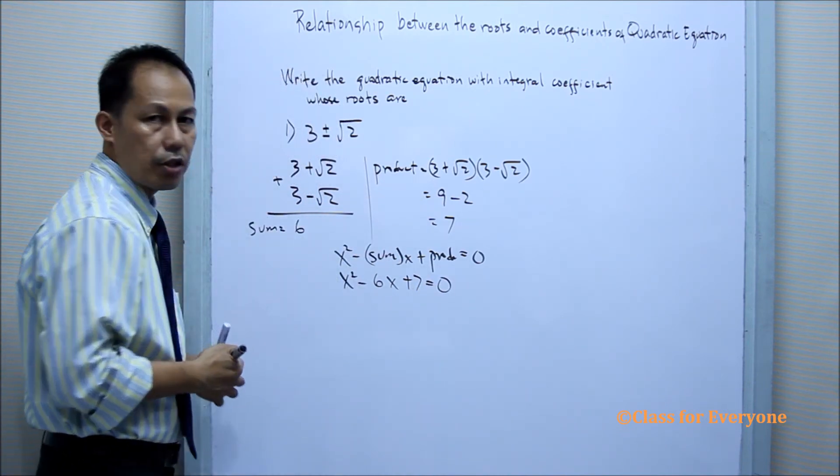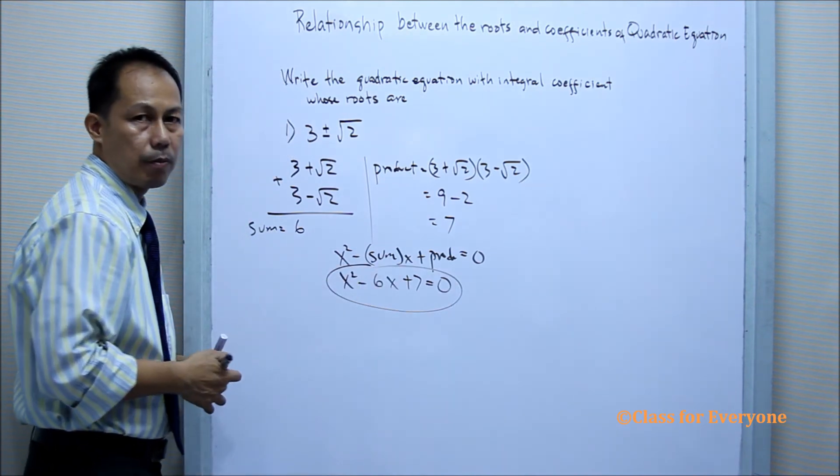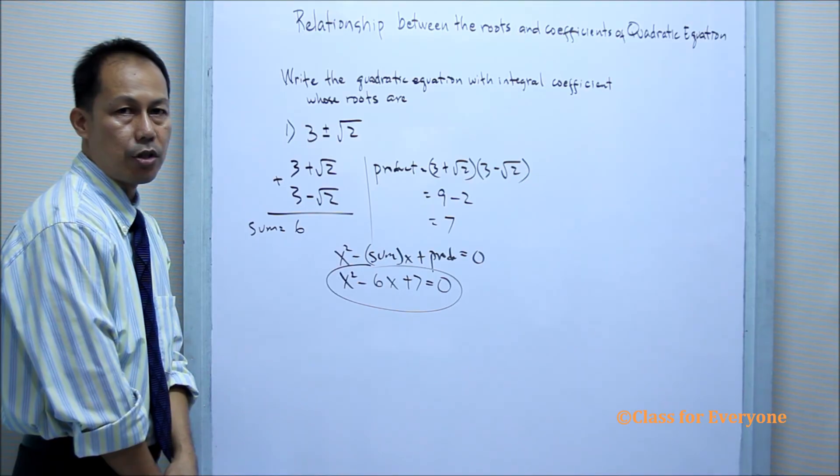So the answer is x squared minus 6x plus 7 equals 0.